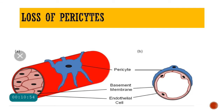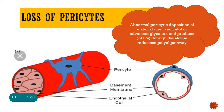The first morphological change in diabetic retinopathy is the loss of pericytes. Pericytes are cells surrounding the endothelial cells in blood vessels — the endothelial cells sit on the basement membrane, and the pericytes cover them from the outer side. Abnormal deposition of material from sorbitol and advanced glycation end products via the aldose reductase pathway causes these pericytes to die. As pericytes form the structural framework of the blood vessel, their loss means the structural integrity of the vessel is also lost.